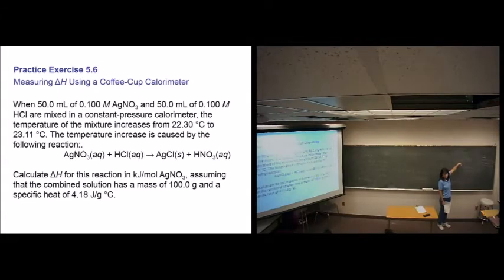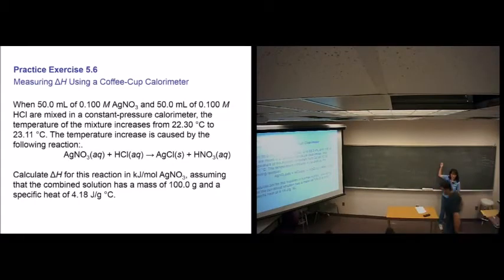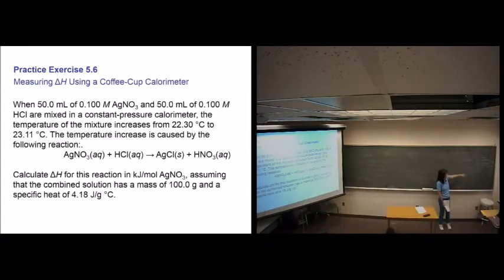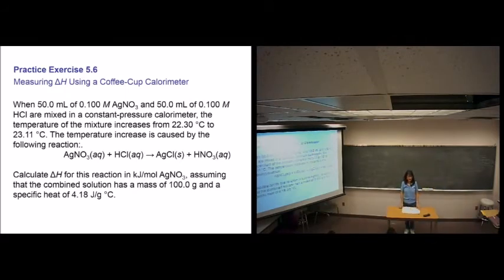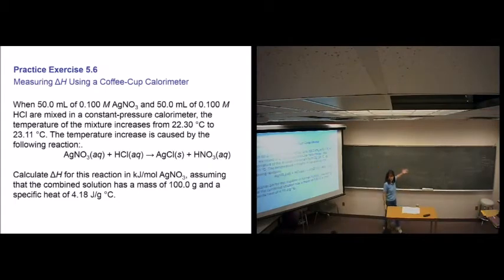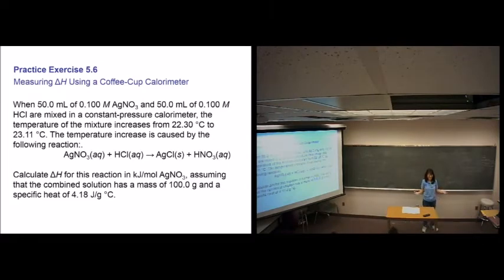That's how we do coffee cup calorimetry — and that's what we'll be doing in lab. Now there's another type: bomb calorimetry. The difference is that coffee cup is open to the atmosphere, so it's at constant pressure. Bomb calorimetry is sealed, so it's not open to the atmosphere anymore.